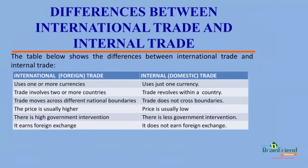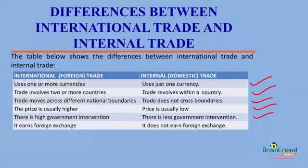The differences between international trade and internal trade are as follows. First, international trade uses one or more currencies, while internal trade uses only one currency. Second, international trade involves two or more countries, while internal trade revolves within a country. Third, international trade moves across different national boundaries, while internal trade does not cross boundaries. Fourth, international trade is usually higher in price, while internal trade is low in price. Fifth, international trade has high government intervention, while internal trade has less government intervention. And lastly, international trade earns foreign exchange, while internal trade does not.